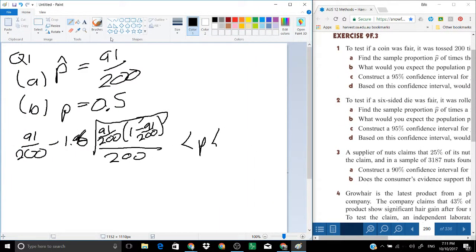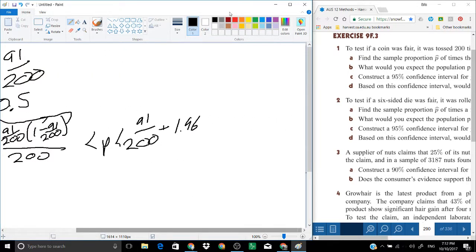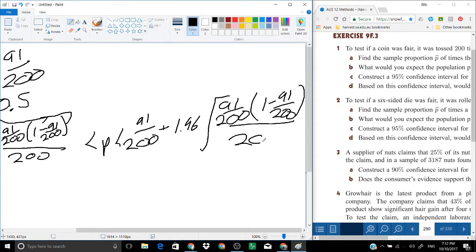Construct a 95% confidence interval for p. So let's actually put that into the form. We'll write this out, then I'm just going to do the calculation. You can use your graphics calculator to check this out. We've got 91 over 200 minus 1.96 times by the square root of 91 over 200 times 1 minus 91 over 200 over 200.